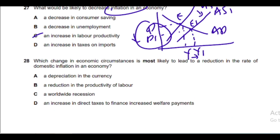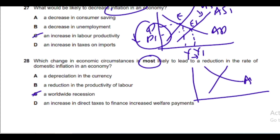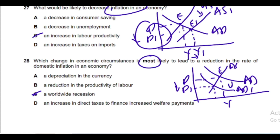Question 28: Which change in economic circumstances is most likely to lead to a reduction in the rate of domestic inflation? The answer is a worldwide recession. When a worldwide recession occurs, aggregate demand falls. On the AD/AS diagram, AD shifts left; new equilibrium shows price falling to P1 and real GDP falling to Y1 — so worldwide recession decreases aggregate demand and decreases the price level.